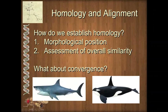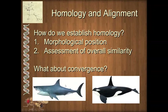Convergence is when we have similarity due to selection for a common environment — a similar trait randomly evolved and was then selected for because organisms were exposed to similar selective regimes. For the dorsal fin: morphological position gives some supporting evidence, and we could look at function, histological makeup, tissue layers, and even developmental gene expression — though developmental biology on these organisms is very tricky. However, the best way to establish homology is this third option: map characteristics onto a phylogeny.